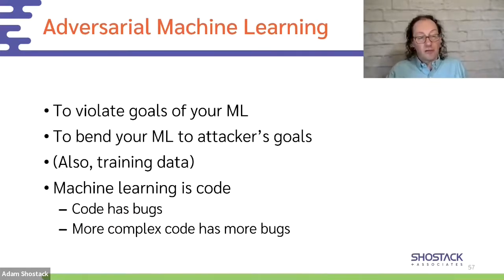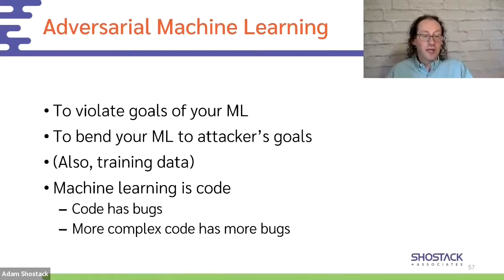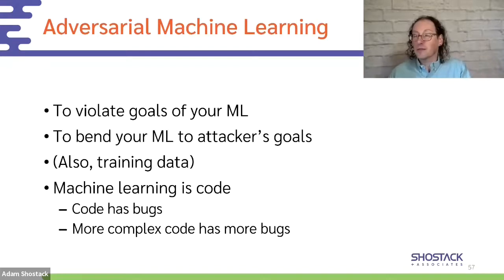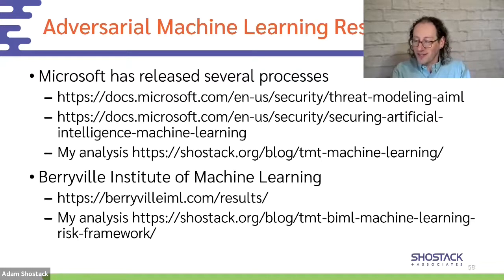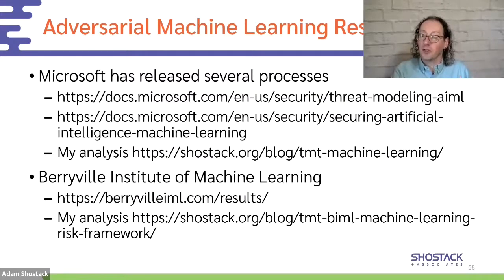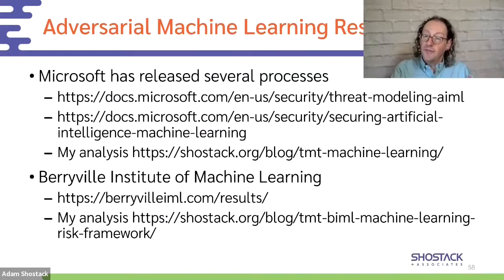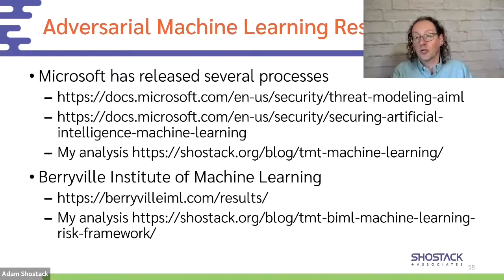Machine learning threat modeling covers adversarial machine learning — convincing someone else's ML to work toward an attacker's goal by attacking the system with traditional attacks or attacking training data. Sometimes we think ML is just magic and forget it's code with bugs that are exploitable in fun ways. There's good work on how to threat model ML systems — you can go to sites like Microsoft and the Berryville Institute of Machine Learning for starting points to answer what can go wrong and what to do about it.